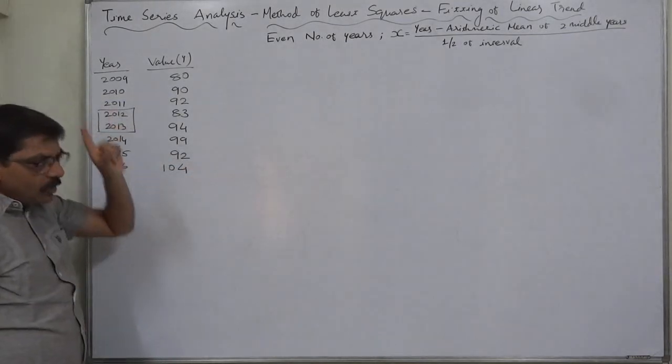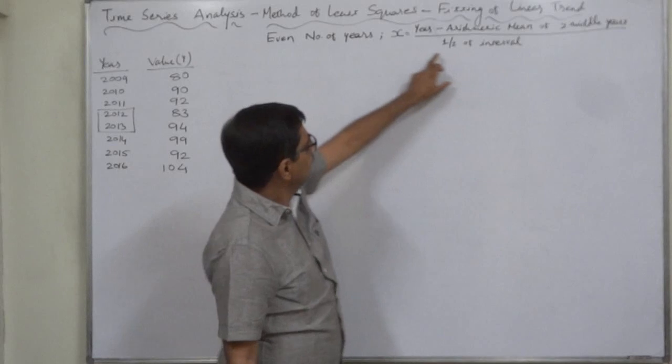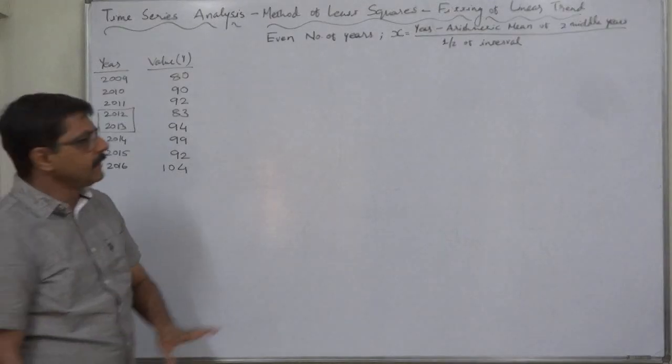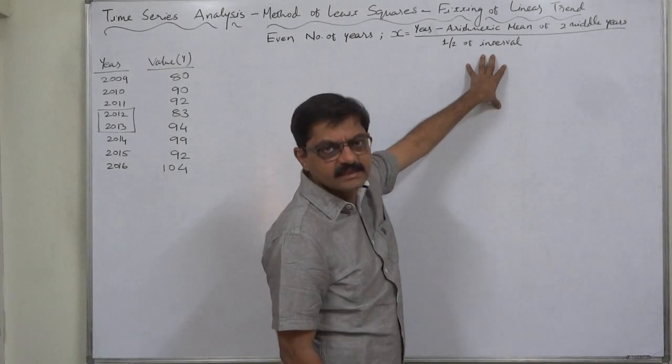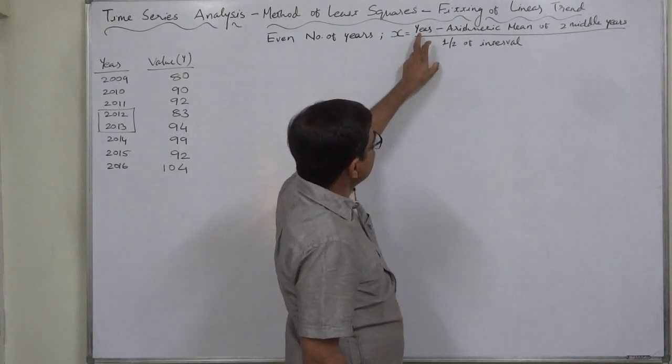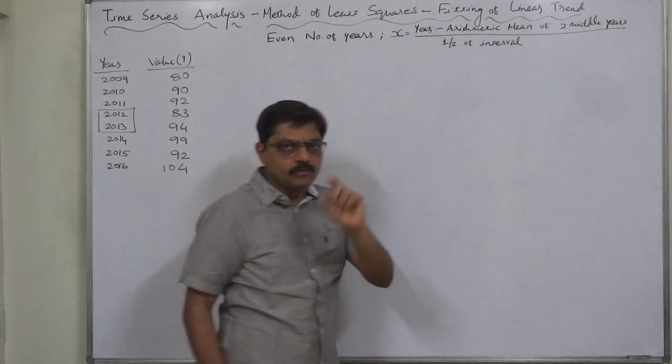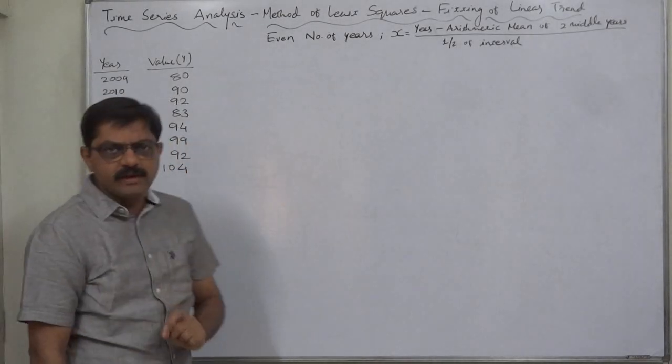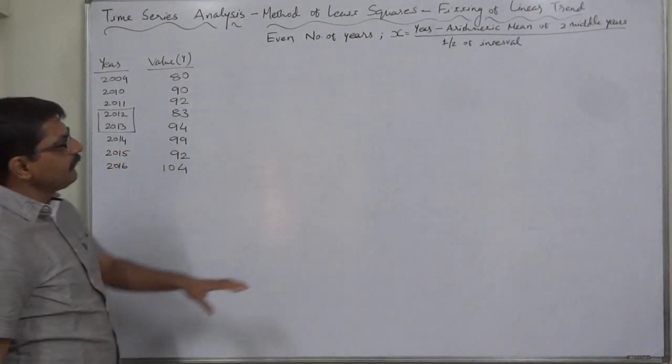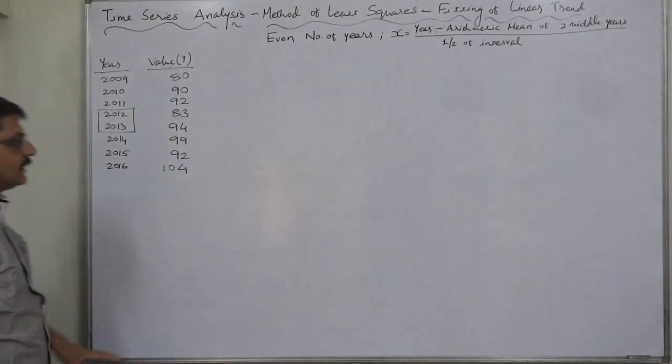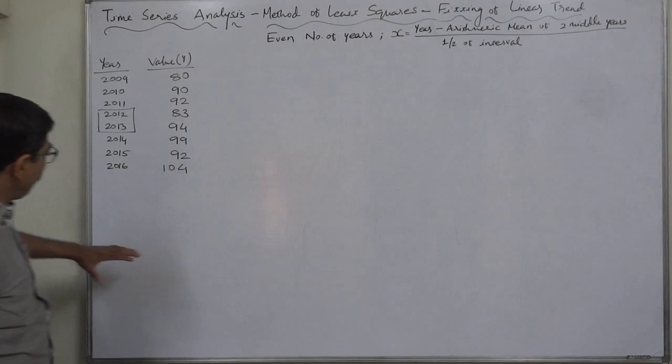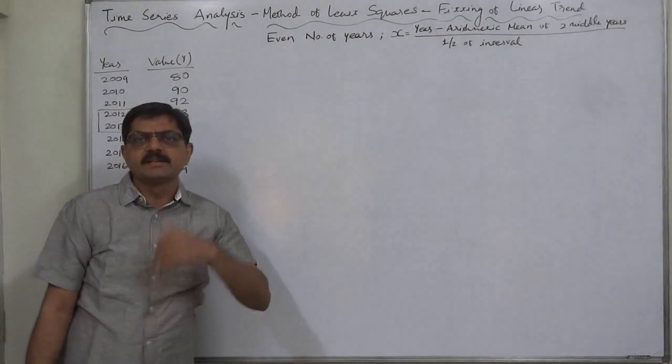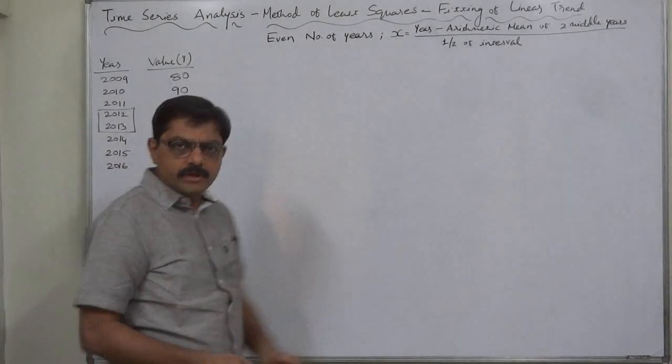In case of odd number of years, remember we had taken X as year minus origin divided by interval. It is not compulsory to divide it by interval. When there are even number of years, it is suggested that X will be year minus origin, and origin is the arithmetic mean of two middle years, divided by half of interval. This is something unusual or different, and that's why I am going to discuss this in this case. Because of this only I have selected this problem. I think it is not necessary to discuss the case having even number of years separately, but because of this only we are going to study this case.